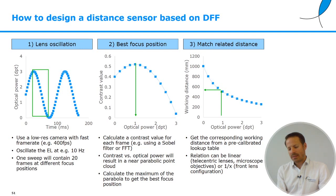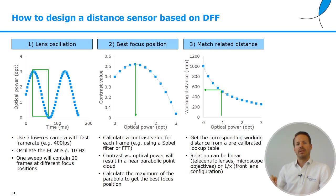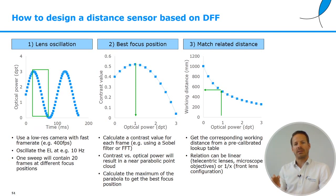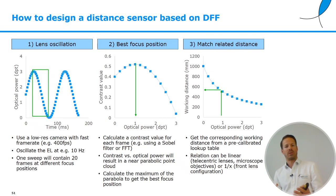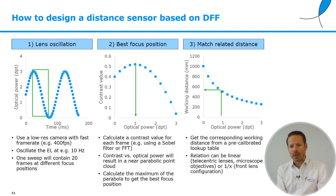You can also use a liquid lens to find distance, not just focus. Run the liquid lens in oscillation, keep recording images, and calculate the best focus position versus optical power. Where you have a maximum on a parabolic curve at the focus point, you can fit a curve and find the best focus position — usable both as an autofocus algorithm and as a distance output. So you might consider using liquid lenses as a low-cost way of sensing distance.